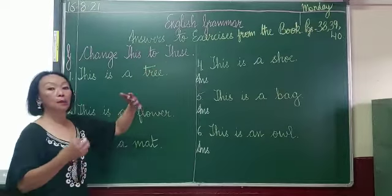And the last one: 'this is an owl' — 'an' is used instead of 'a' because O is a vowel. So 'this' becomes 'these', T-H-E-S-E; 'is an' becomes 'are'; 'owl' becomes 'owls', O-W-L-S: these are owls. Now the next exercise, H: change 'those' to 'that'. From plural we have to change it to singular.